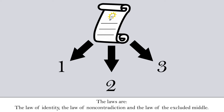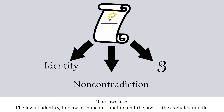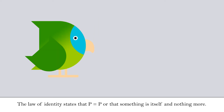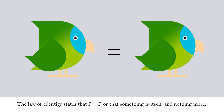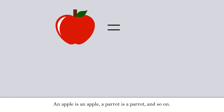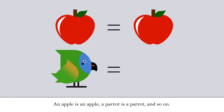The laws are the law of identity, the law of non-contradiction, and the law of the excluded middle. The law of identity states that p equals p, or that something is itself and nothing more. An apple is an apple, a parrot is a parrot, and so on.